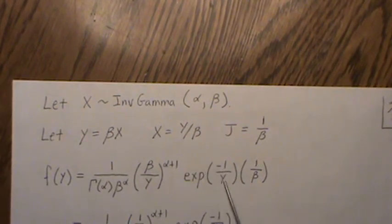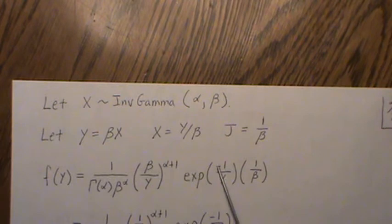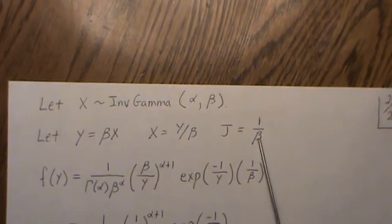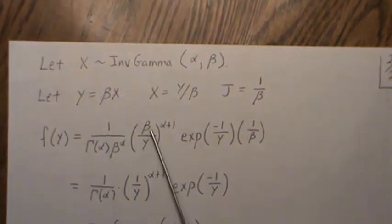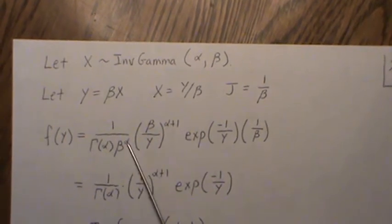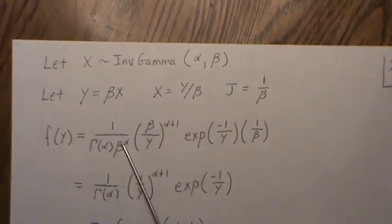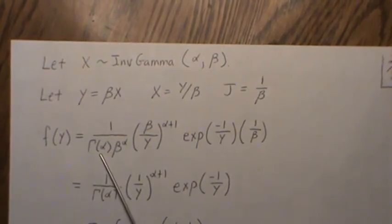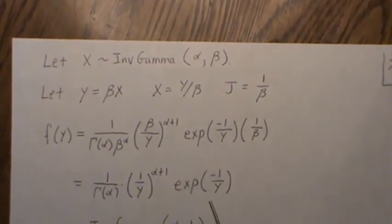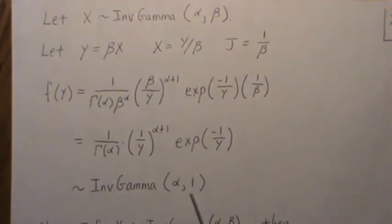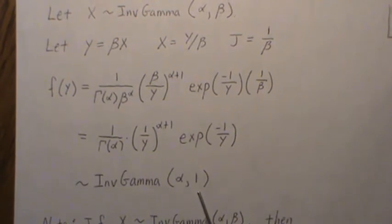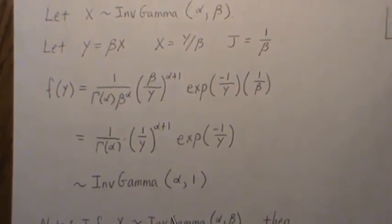Here when you plug it in you get some cancellation, so it's just minus 1 over Y, and this is the absolute value of the Jacobian. This beta, there's alpha of them, so you get a cancellation there. There's one left but that cancels with this, so we're just left with these terms here, but this is actually an inverse gamma of alpha comma 1.